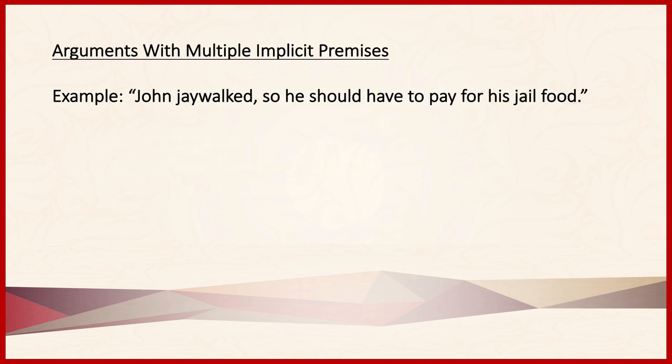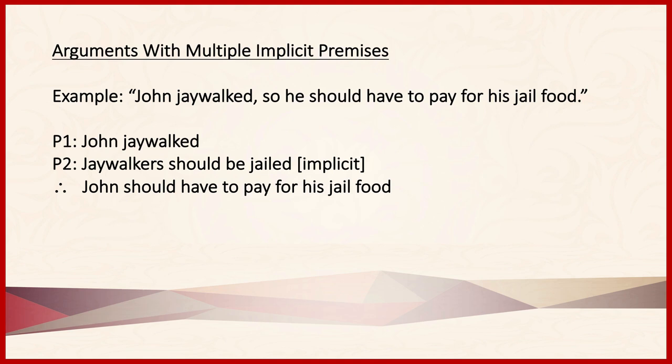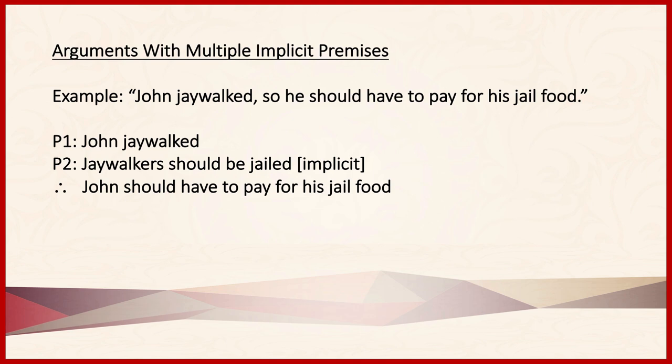Many arguments require that we fill in multiple implicit premises. For example: John jaywalked, so he should have to pay for his jail food. There's obviously quite a large gap between the claim that he jaywalked and the fact that he has to pay for his jail food. So, one thing we'll want to note is that jaywalkers should be jailed. John jaywalked; jaywalkers should be jailed; therefore John should be jailed. But we still have a gap between the fact that he should be jailed and that he should pay for his jail food. That's where the third premise comes in: those in jail should have to pay for their food. Notice that the arguer is assuming both of these things to be true.